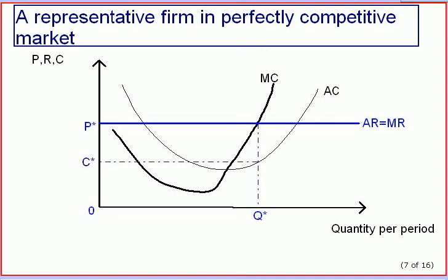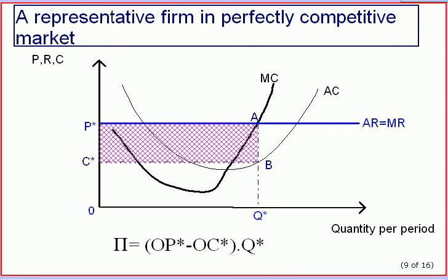Profit is the difference between average revenue and average cost. We can work out the average cost of producing Q star by drawing up vertically from Q star to the average cost curve. Thus profit per unit is OP star minus OC star, and total supernormal profit is calculated by multiplying profit per unit by the optimal output Q star — shown on the diagram as the shaded area AB, C star, P star.